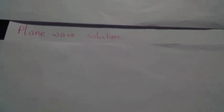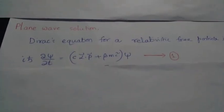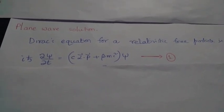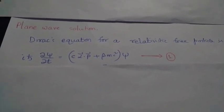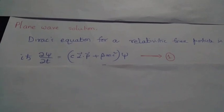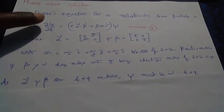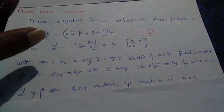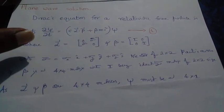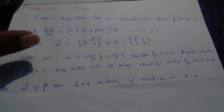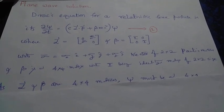The topic of the video is the plane wave solution for Dirac's equation. Dirac's equation for a relativistic free particle is given by equation number one, involving the alpha and beta matrices, which are defined in terms of the Pauli spin matrices, the vector sigma, and the identity matrix I.